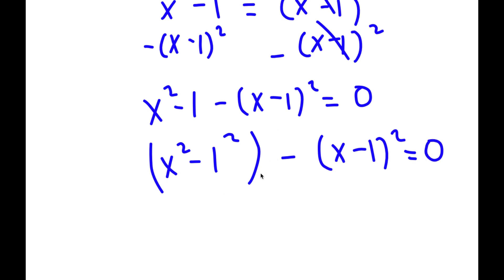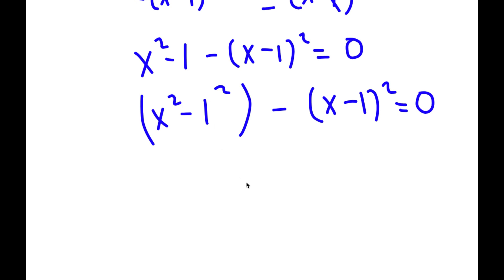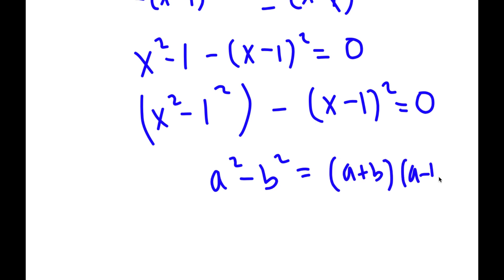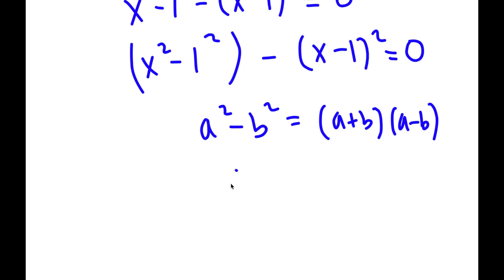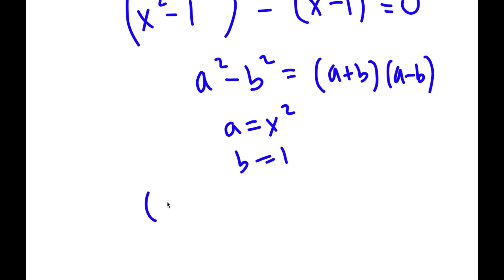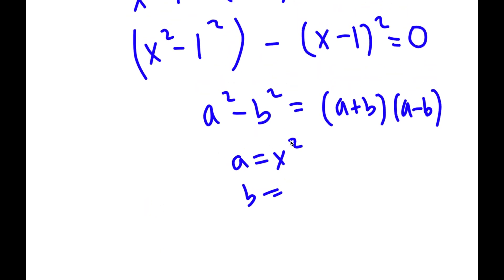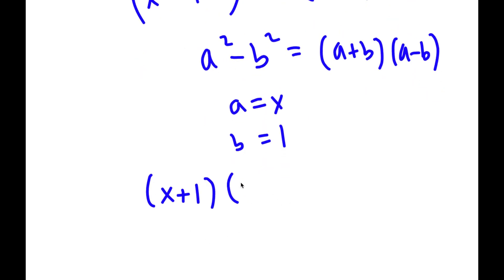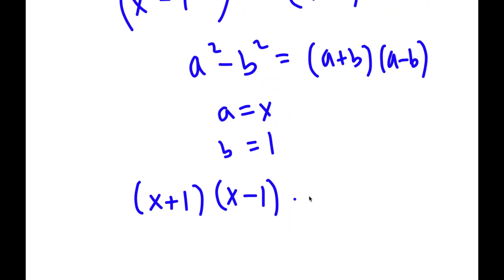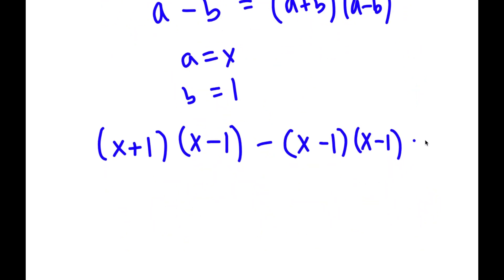So now I have x squared minus 1 squared minus x minus 1 squared is equal to 0. If I have something in the form a squared minus b squared, this is equal to a plus b times a minus b. In this case for x squared minus 1 squared, a is x and b is 1. So I have x plus 1 times x minus 1. And then I have this minus x minus 1 times x minus 1, because it's the same thing as x minus 1 squared. This is equal to 0.